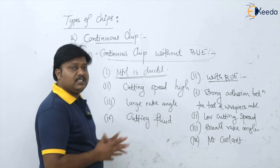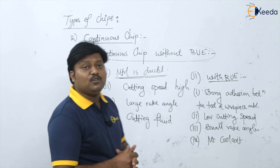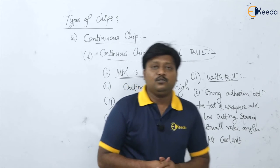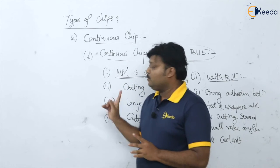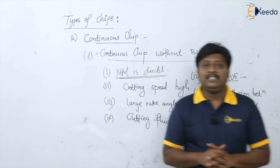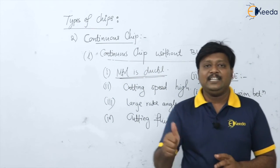So these are the favorable conditions for continuous chip with built-up edge and without built-up edge. Many linear questions are coming from this topic, so note it down nicely. Thank you.